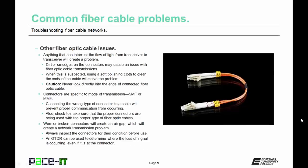There are some other fiber optic cable issues that can arise. Anything that can interrupt the flow of light from transceiver to transceiver will create a problem. Dirt or smudges on the connectors may cause an issue with fiber optic cable transmissions. When this is suspected, using a soft polishing cloth to clean the ends of the cable will solve the problem. There is a caution: never look directly into the ends of connected fiber optic cable, as you run the risk of damaging your eyes.